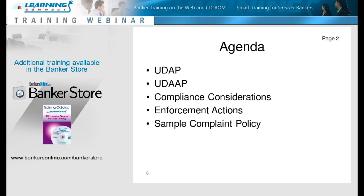One question that will be asked is whether it's UDAP with one A or two. On my computer I now have Reg AA dash UDAP with two A's, because you can discuss the extra A — the abusive side that Dodd-Frank added. But the penalties come under Section 5 of the FTC, which is one-A UDAP. I don't draw a distinction between the two anymore. I put everything into one essential file folder, because they share definitions and they share enforcement actions. Whether you call it UDAP or UDAAP, it doesn't matter.